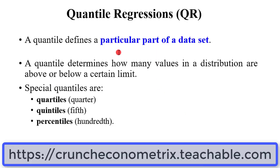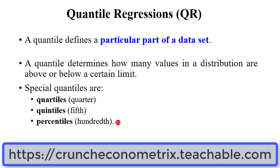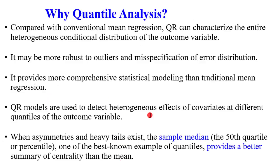A quantile defines a particular part of your dataset. It determines how many values in the distribution are above or below a certain limit. There are several types of quantiles: quartiles, quintiles, or percentiles. These are all variants of quantiles.